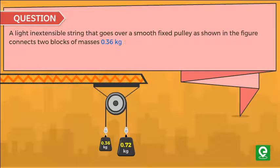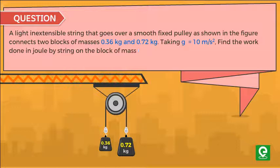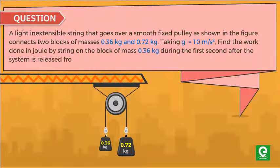Taking g equal to 10 meter per second squared, find the work done in Joules by the string on the block of mass 0.36 kg during the first second after the system is released from rest. This question was asked in JEE Main 2009 exam.